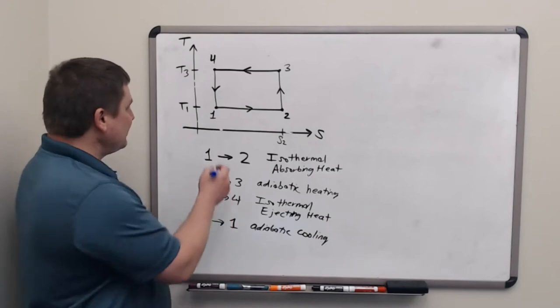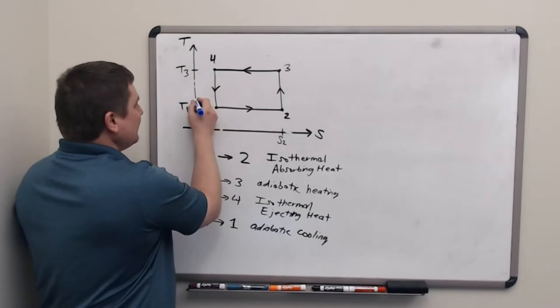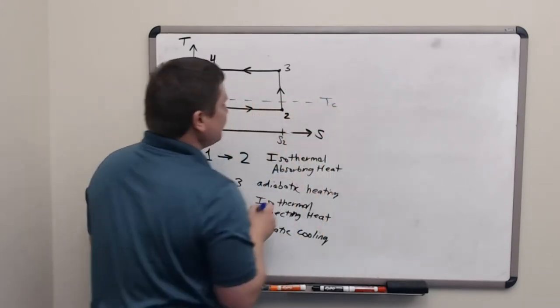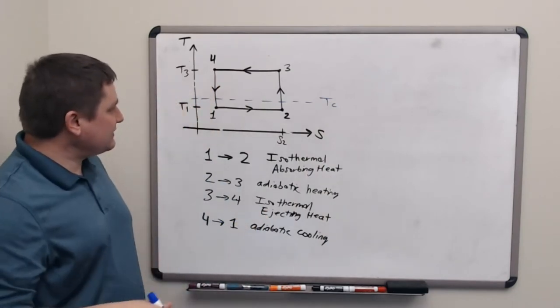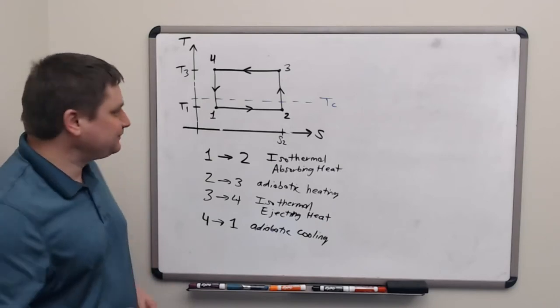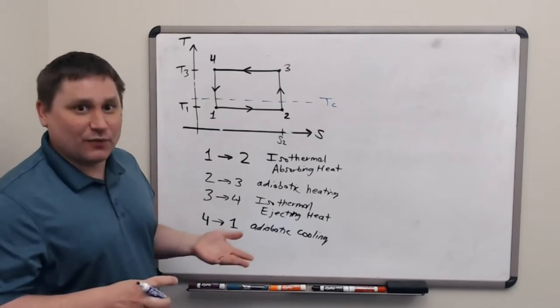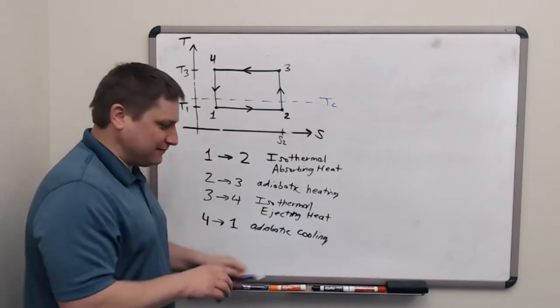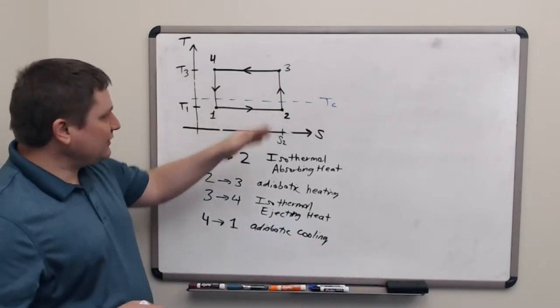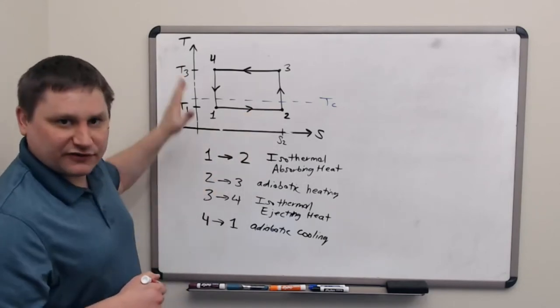So we have the potential here to absorb heat from a reservoir that's anywhere hotter than T1. Let's put a cold reservoir, Tc, at kind of the minimal level above T1 that would allow us to absorb heat from it. I don't want to put this way above because then the cycle would be somewhat uninteresting. We'll see why in a bit. So let's say we absorb heat from 1 to 2 from this temperature reservoir at Tc, right there in the middle of the temperature range of the cycle.